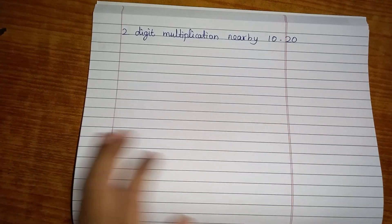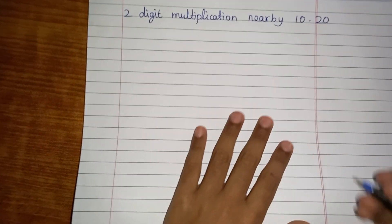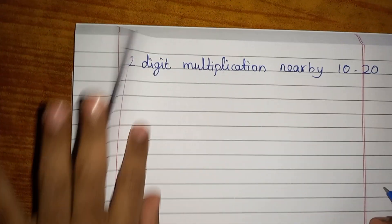Hi guys, welcome back to Fun Tag. Today I'm going to tell you another method. It's called two-digit multiplication nearby 10 to 20, and it is very easy. You can do it within a second. So let's see how. First we are going to take an example.